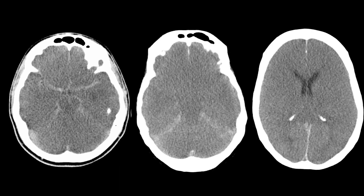Here is a different patient in which you can see the pseudo-subarachnoid sign mimicking the middle cerebral artery and around the basal cisterns, around the tentorium. You get this increased attenuation in the falx and around the superior sagittal sinus.